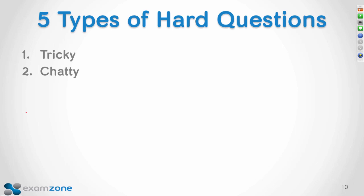A chatty question may be long or have a lot of numbers, and you're not sure if you need all of them — often they'll give you four numbers when you only need two. Needlessly negative questions use phrases like 'all the following are true except' or 'none of the following would be prohibited except.' Slow down, figure out what they're asking — are they looking for what's prohibited or what's not prohibited? Once you identify these, mark the answers accordingly.